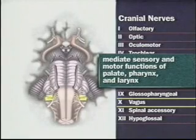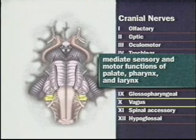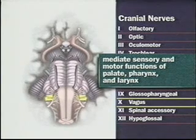Cranial nerves 9 and 10, which are the glossopharyngeal and vagus nerves, mediate the sensory and motor functions of the palate, pharynx, and larynx.